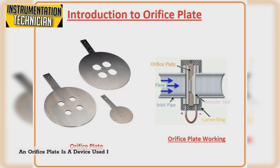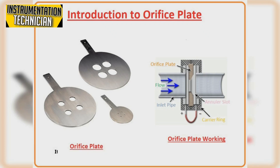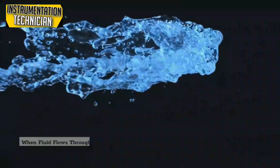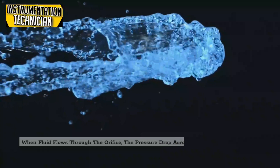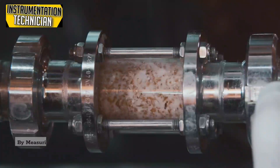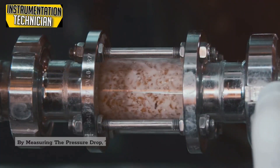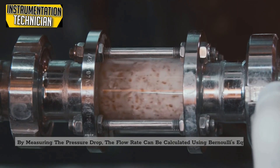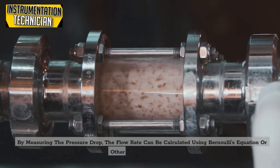An orifice plate is a device used for measuring the rate of fluid flow, typically in a pipeline. It consists of a thin plate with a hole, the orifice, in the center. When fluid flows through the orifice, the pressure drop across the plate is proportional to the flow rate. By measuring the pressure drop, the flow rate can be calculated using Bernoulli's equation or other flow equations.